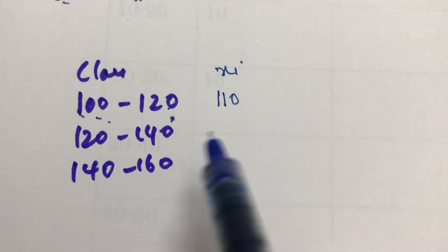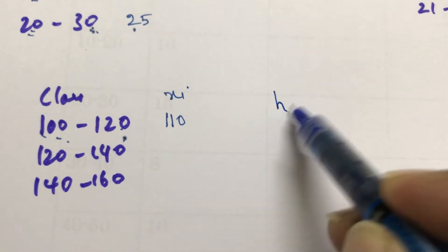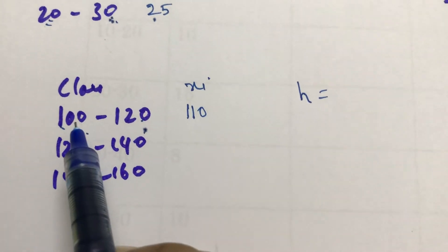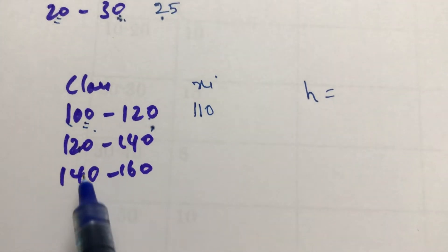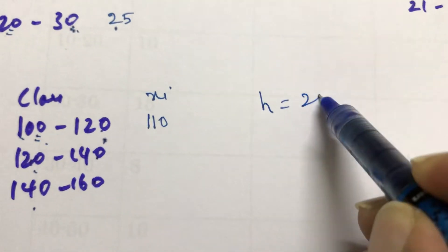So I will give one hint here, a logic where we can write the remaining values very fast. I told already how to find the value of h. We need to subtract: 120 minus 100, or 140 minus 120, or 160 minus 140. So h is here 20.